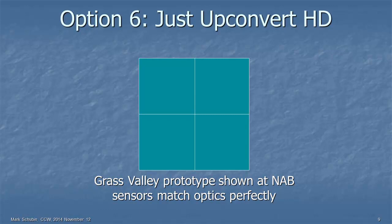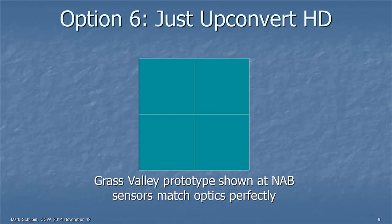And then finally, we have option 6, which I call just up-convert HD. The Grass Valley people are sensitive about my saying up-convert. But it's basically an HD camera, and this is the 4K camera that Grass Valley showed at NAB. But think about it for a while. The sensor is perfectly matched to the optical filtering, which is perfectly matched to the lens mount. The sensors have the appropriate depths for the colors. So any processing or up-conversion that you do on this is going to be on a very pristine signal.